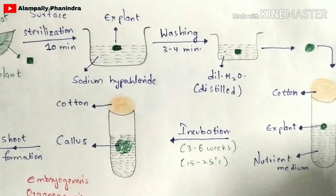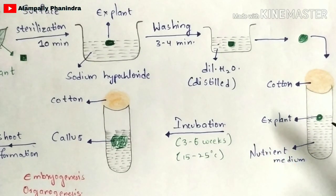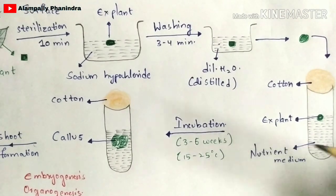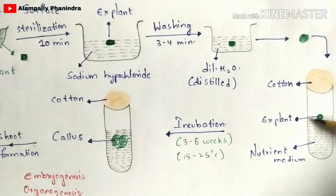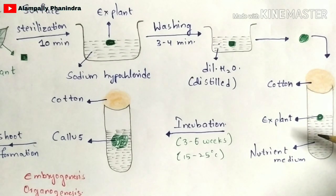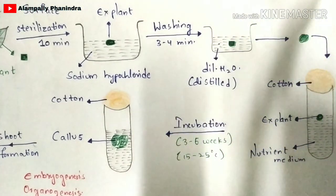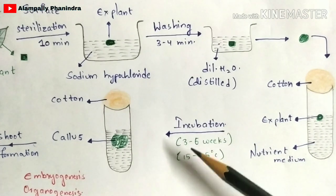Now you have to incubate it. The cytokinin in the nutrient medium plays a major role — it induces cytokinesis, which is the cell division process. The explant absorbs the cytokinins, and since cytokinins stimulate cell division, the explant undergoes rapid cell division to form a mass of cells called callous. This whole process is called incubation, and it occurs over a period of three to six weeks at a temperature of 15 to 25 degrees Celsius.